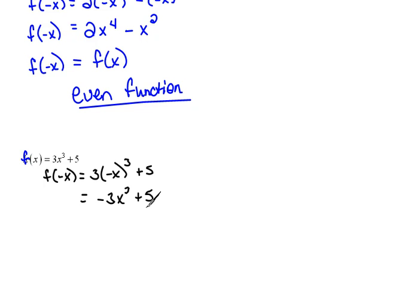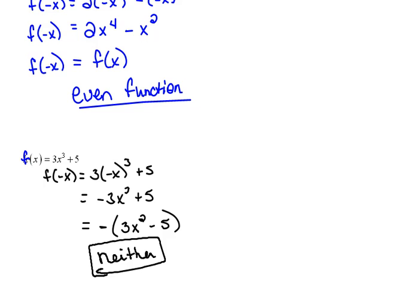Now, this is not the exact same thing that we started with up here. Our signs are wrong. If we were to pull that negative out the front, then we would have negative 3x squared minus 5. Well, again, it's not the exact opposite of what we started with. So this is neither. It's actually neither even nor odd.